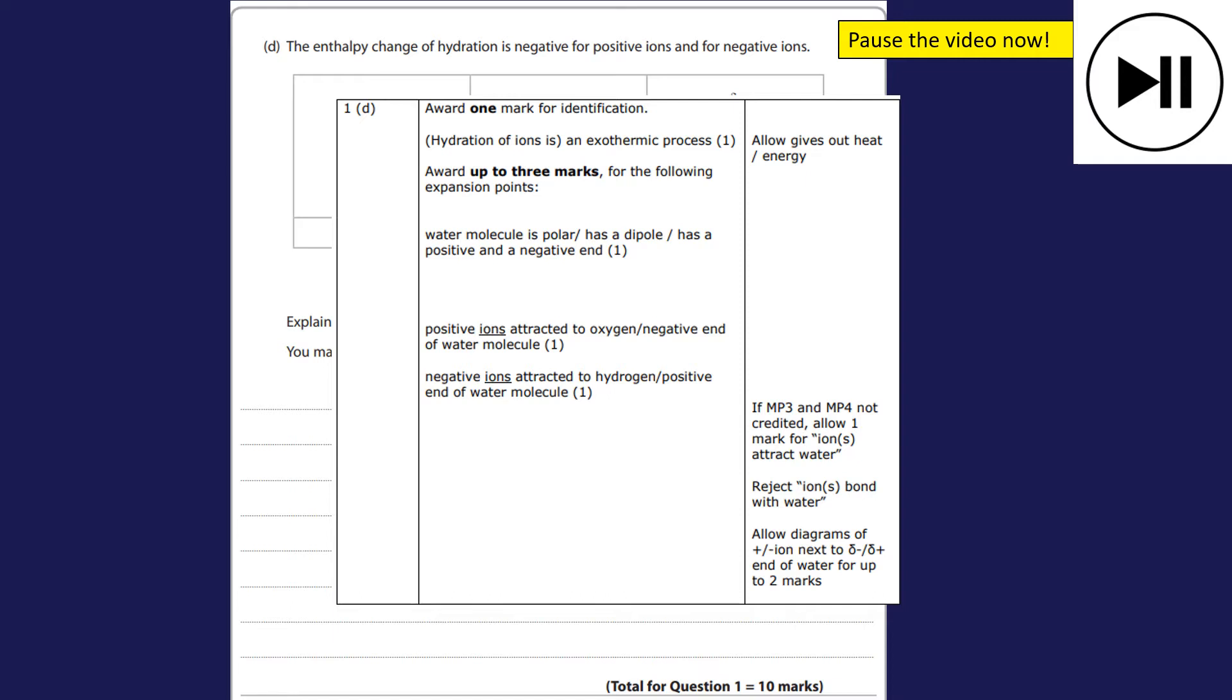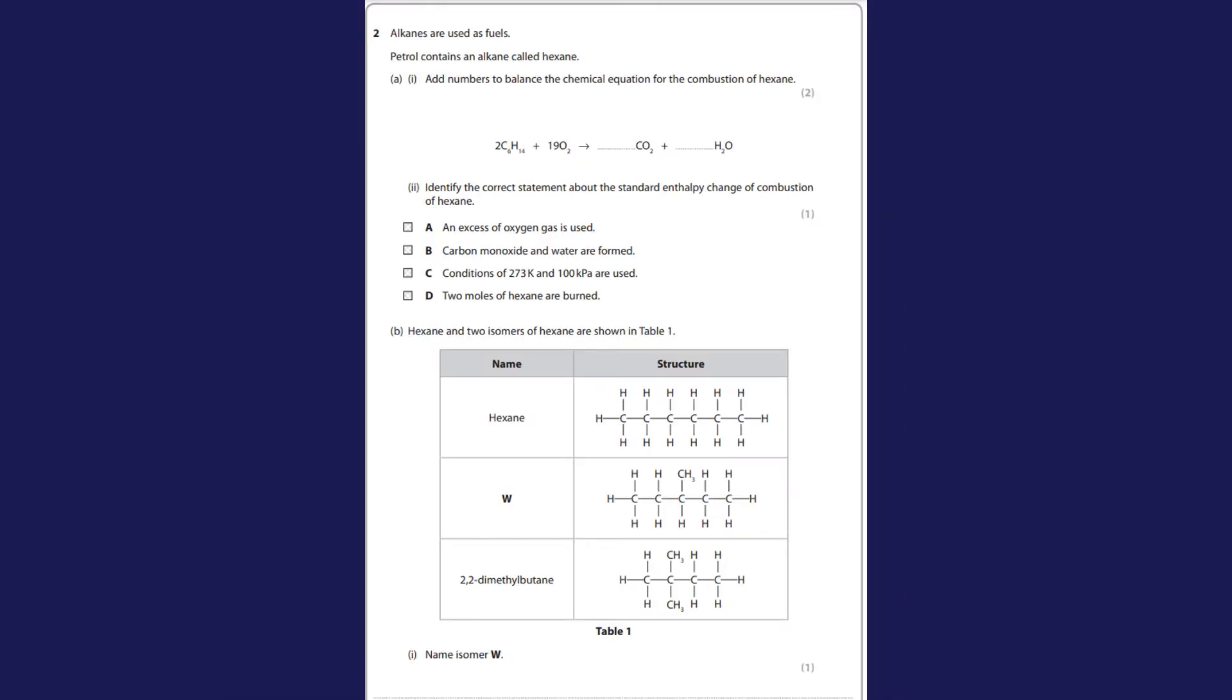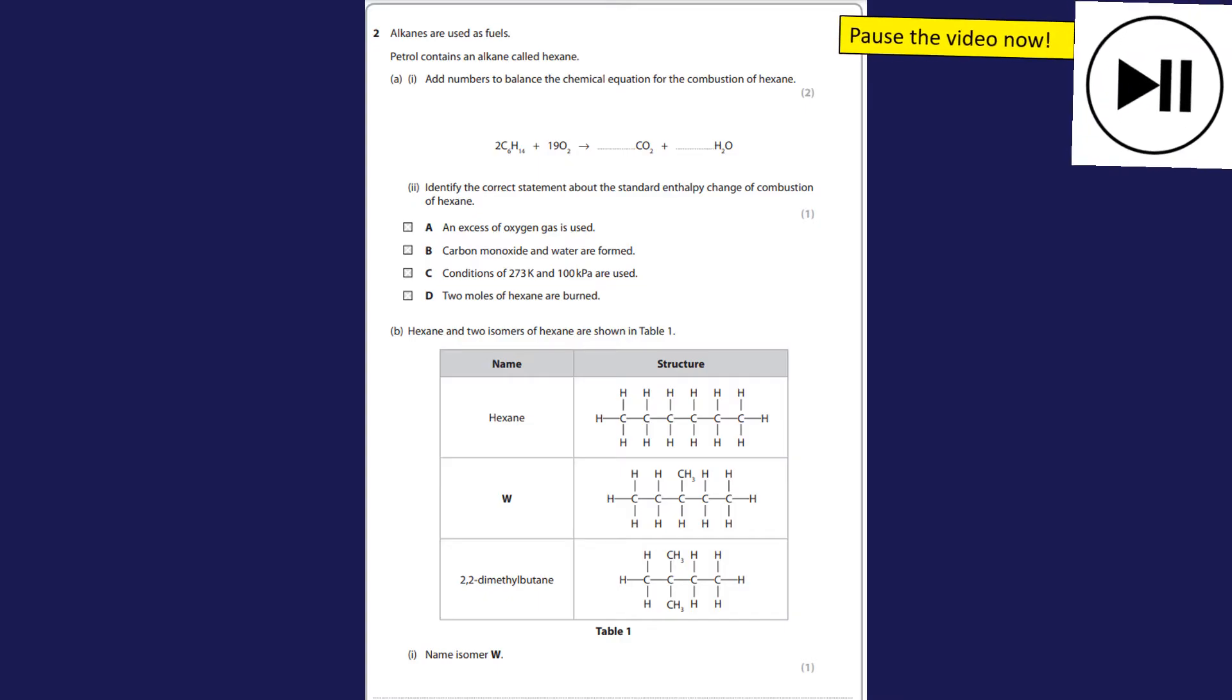Moving on to question two then. As always, pause the video, have a go, and when you're ready to hear the answers unpause. Right, so first off we've got to balance an equation. It's 2C6, so that's going to be 12 carbon, so I need to put 12 here. Hydrogens, I've got two lots of 14, so that's 28, so I need to put 14 here to have the 28. You can check the oxygen balance, but that's your final answer. It's going to be one mark for the 12 and one mark for the 14.